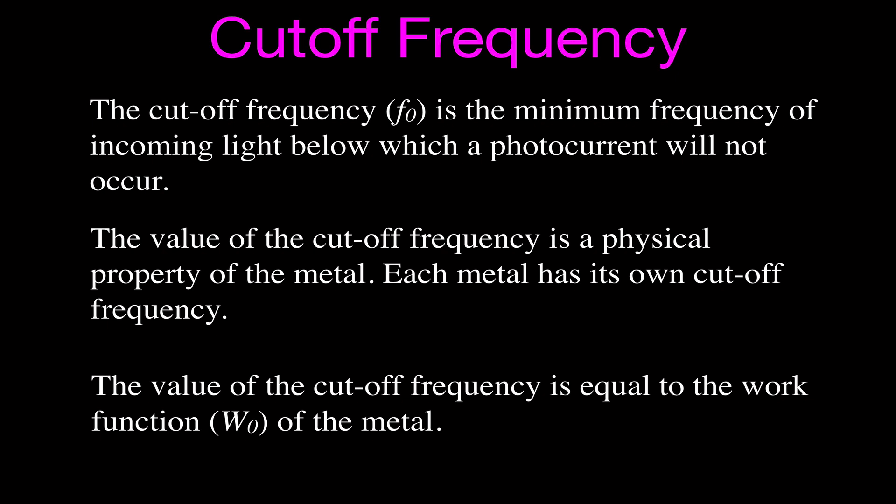Sodium metal has a different cutoff frequency than gold or silver or some other metal. The value of the cutoff frequency is equal to the work function of the metal. Now, the cutoff frequency is just a frequency, and the work function is energy. So to make that statement truly accurate, you take the cutoff frequency and multiply it by Planck's constant H to get energy in joules, which you can compare to the work function, which is usually expressed in electron volts. But they're both energy.